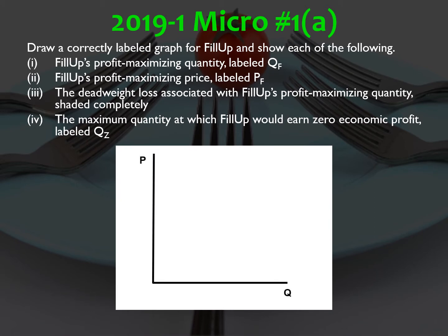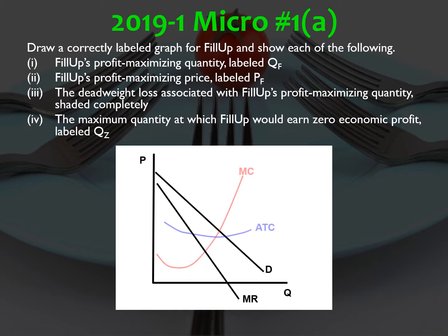For parts one and two: quantity on the x-axis, price on the y-axis, demand greater than marginal revenue as is the case for a monopoly. There's MC and ATC. Look to see where MR equals MC — that's at QF. Go up to the demand curve to find PF. Deadweight loss is the area representing the loss of efficiency due to not producing the socially optimal quantity, which is where MC equals demand. That purple area is the loss of efficiency due to the monopoly.